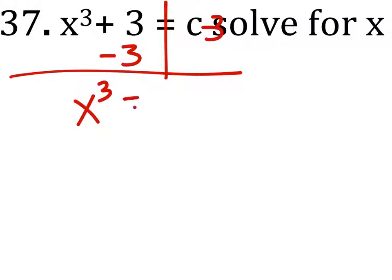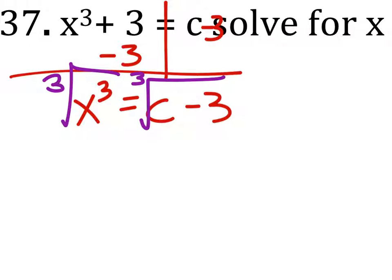This gives us x cubed equals c minus 3. Now what we must do is take the cube root, the inverse of cube, so the cube root of this, and we get x equals the cube root of c minus 3.